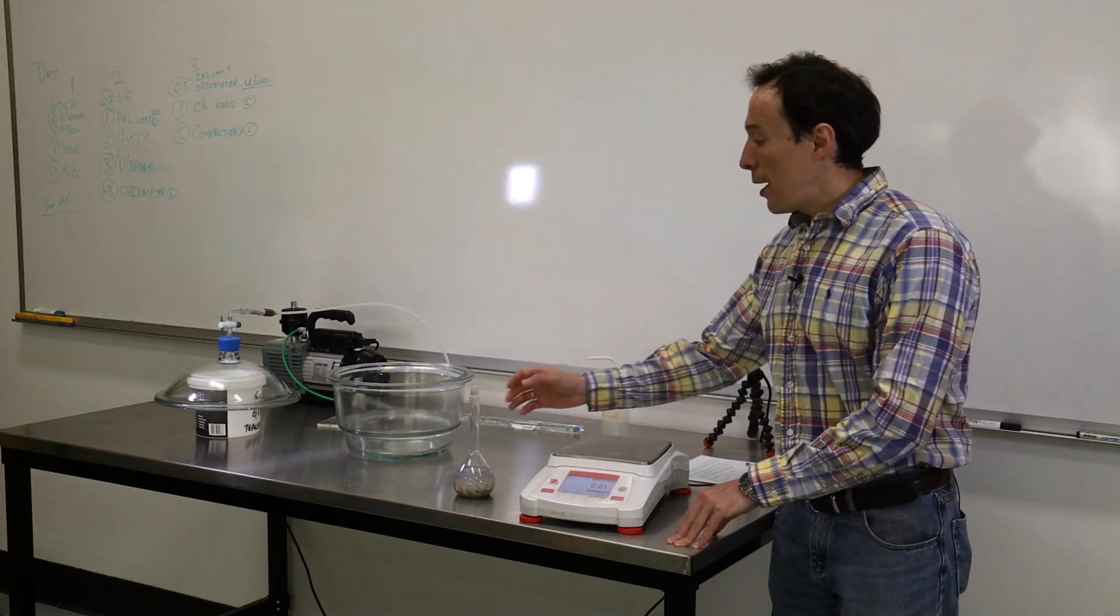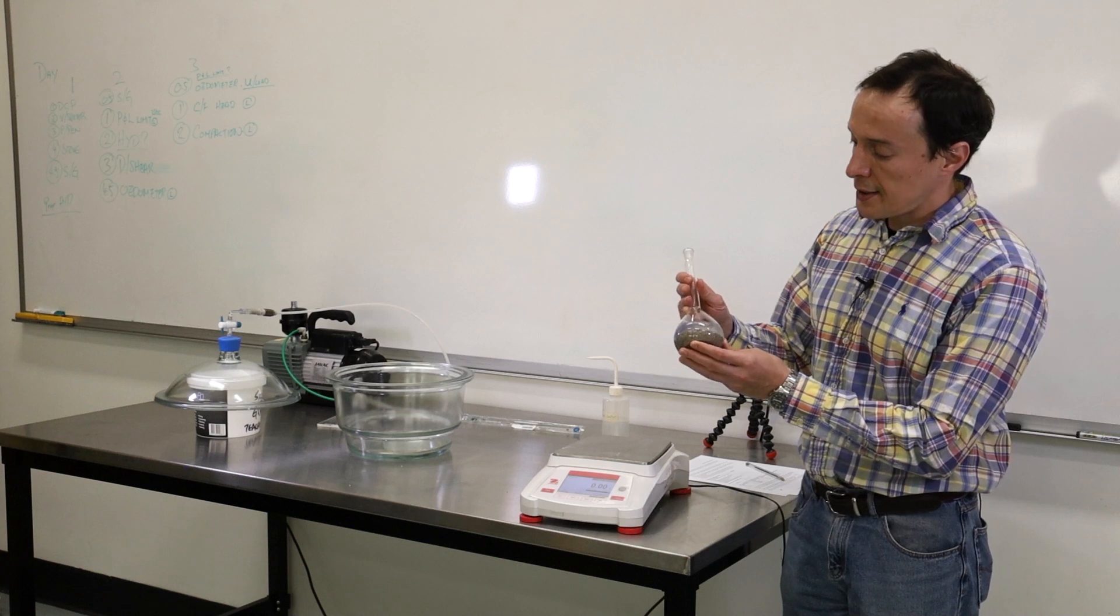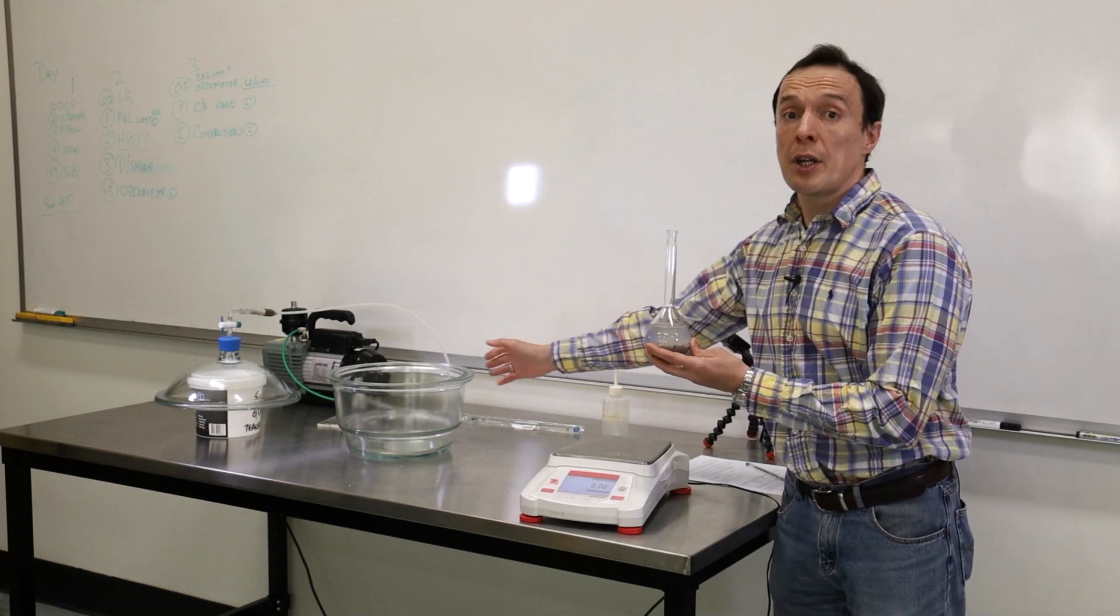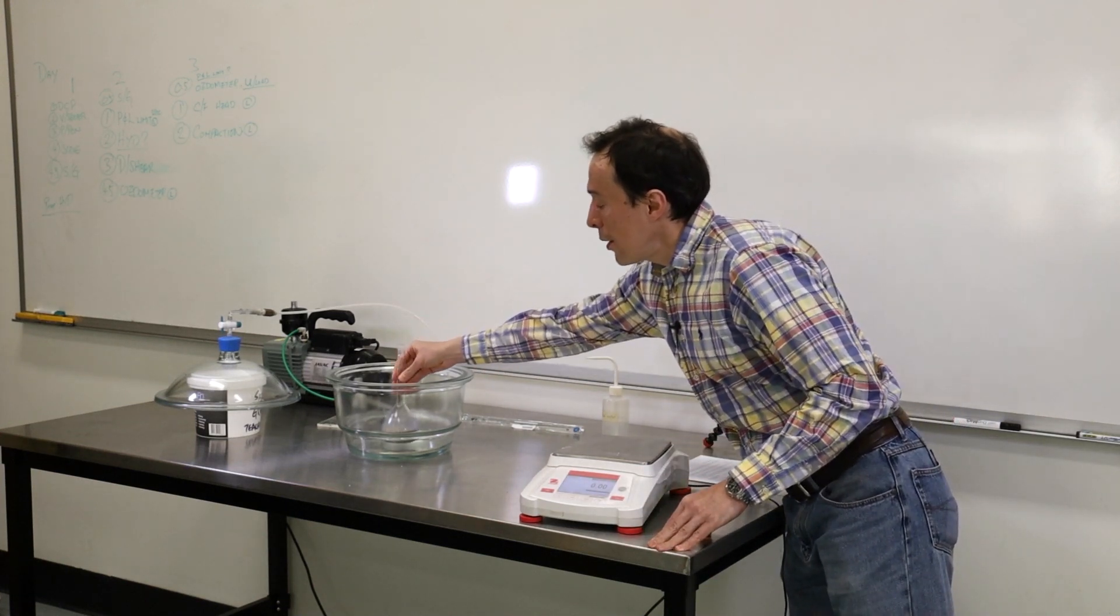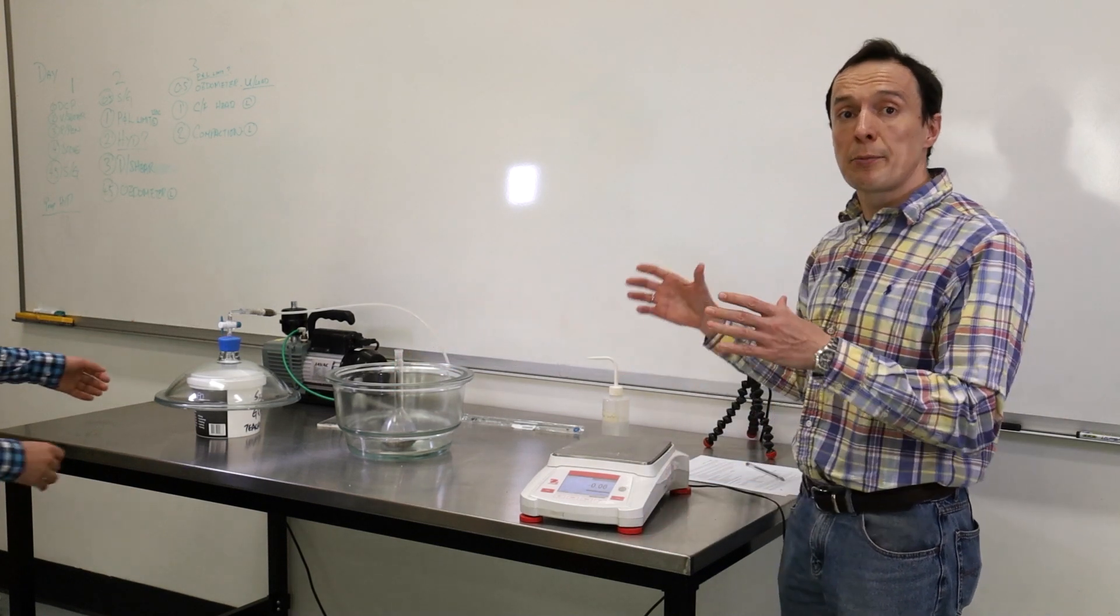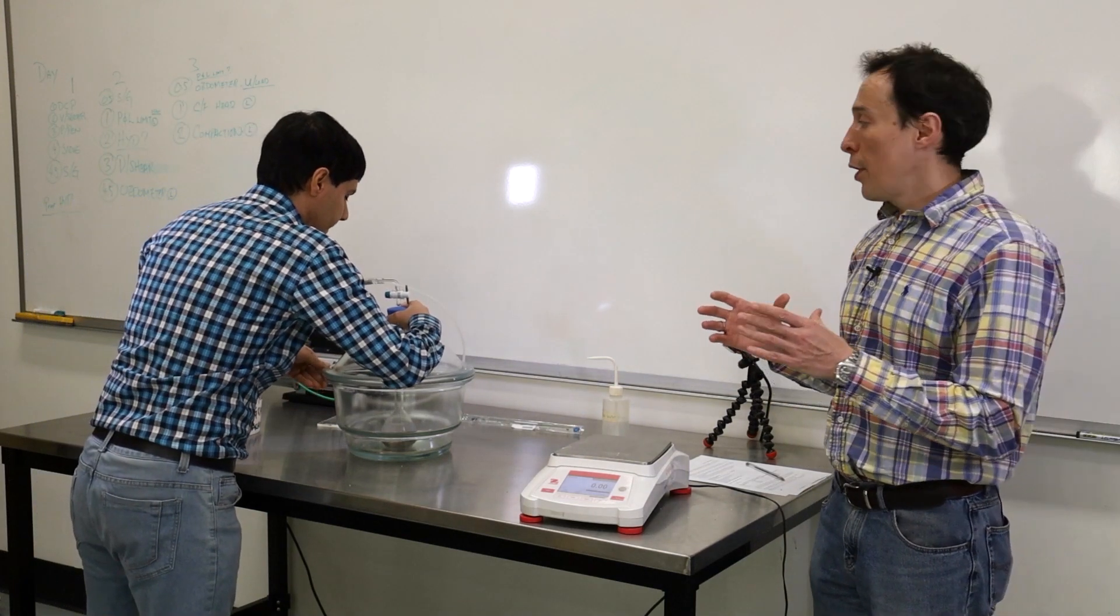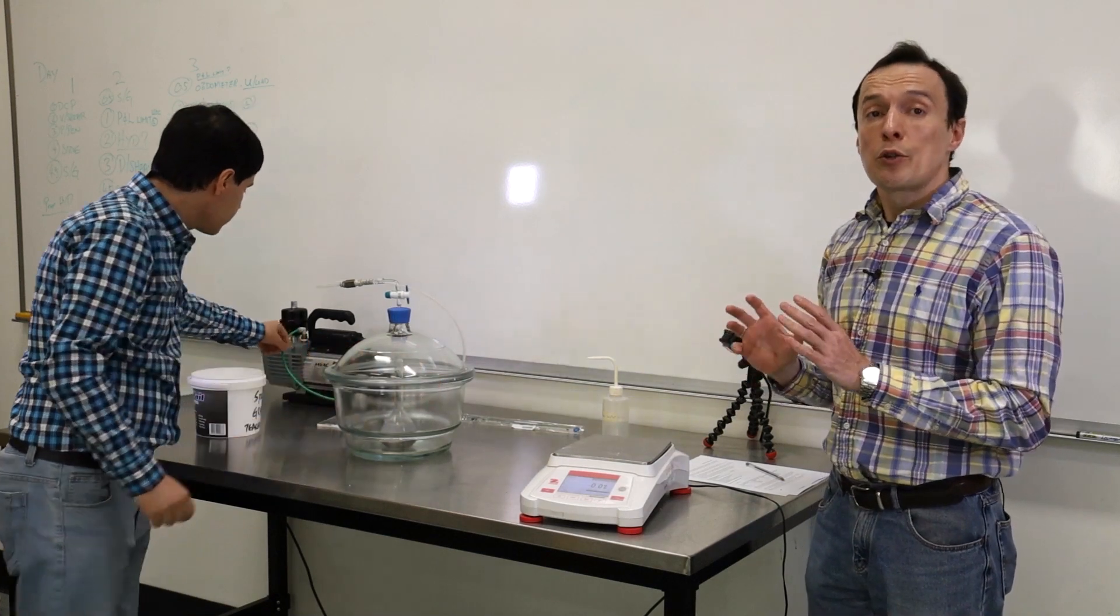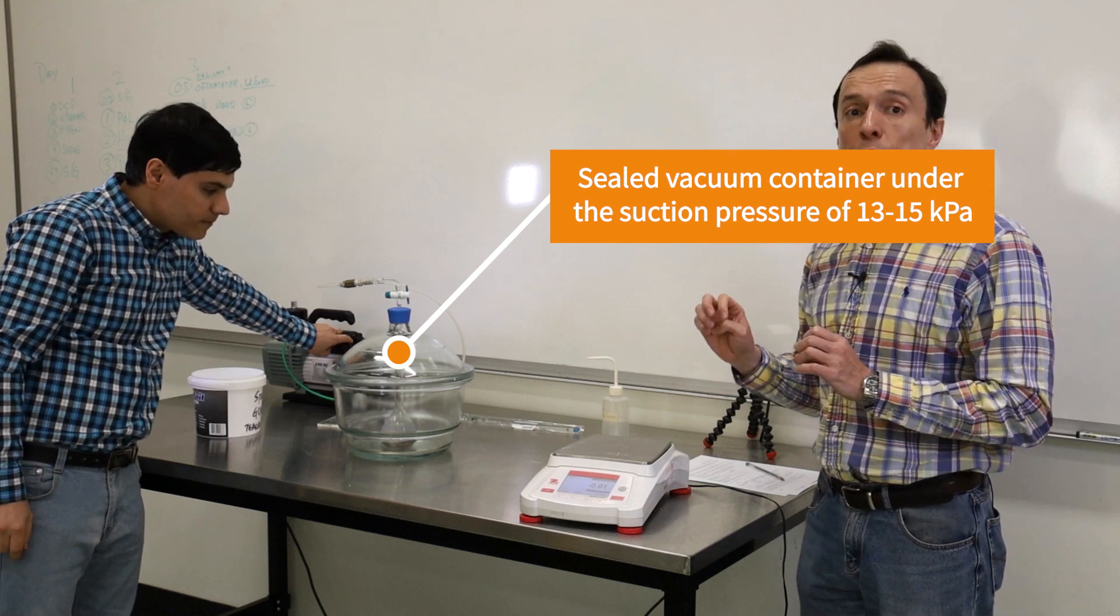Hello again, this is the soil that we prepared yesterday. It's now saturated. And what we'll do next is we're going to put it inside this container like this. And we're going to seal it, we're going to cover it with the lid and seal the whole container. And after that, we'll apply vacuum. We'll apply vacuum at about 13-15 kPa to suck the air out of the soil. And we will do this test for about 10 minutes.